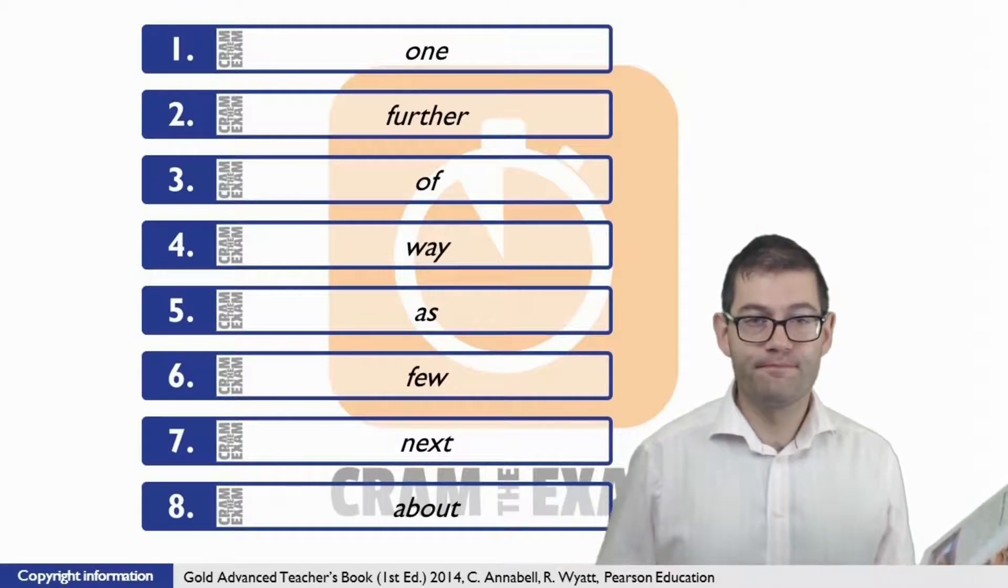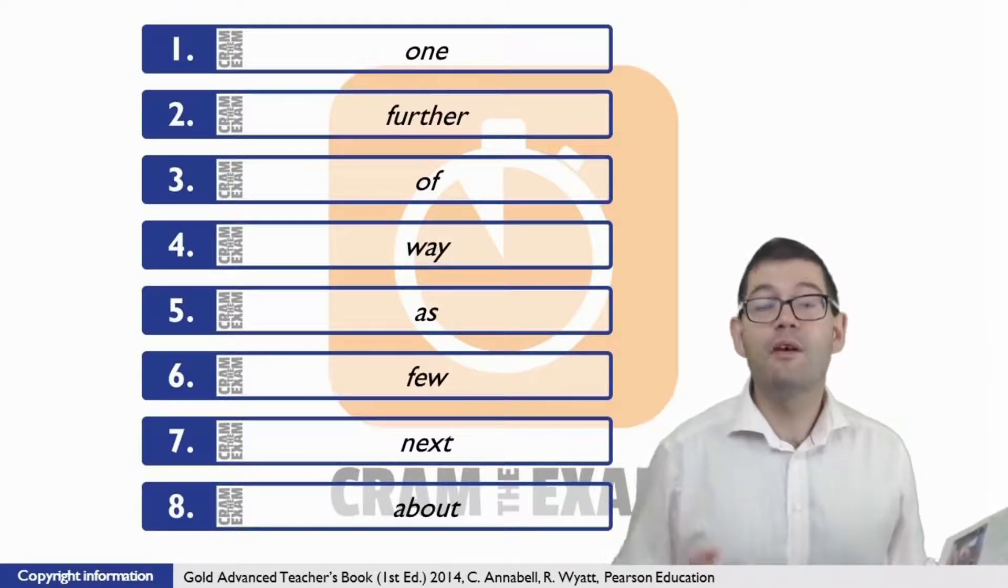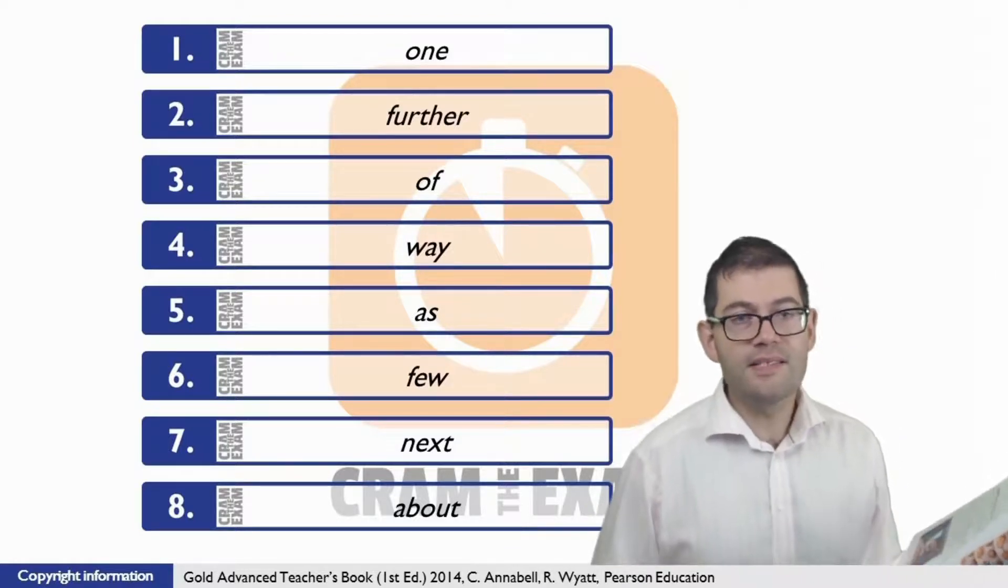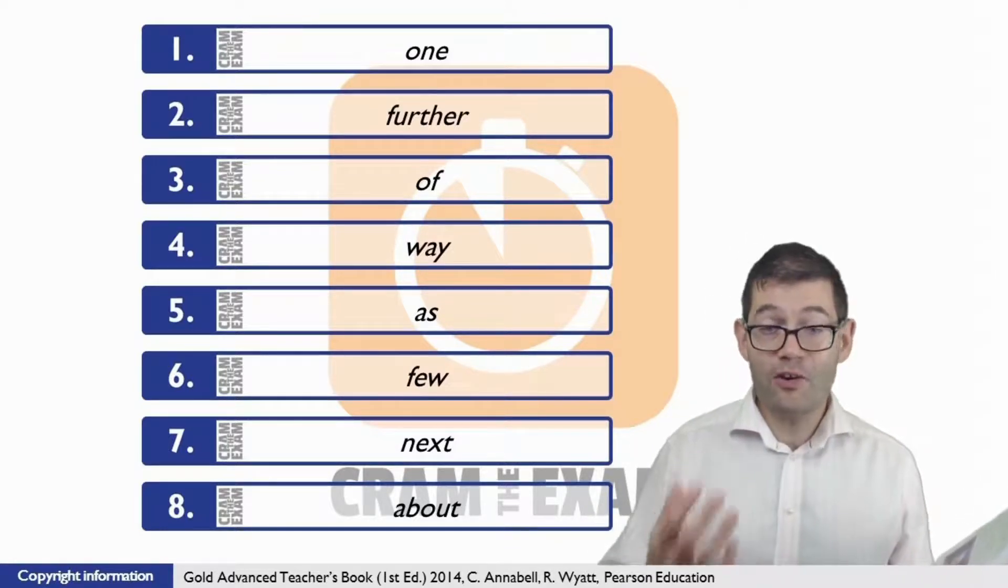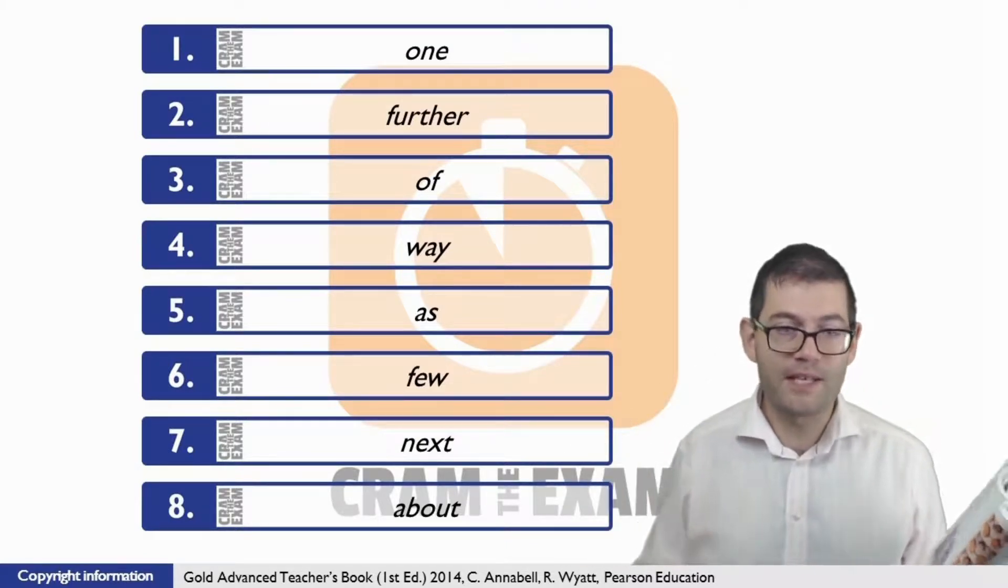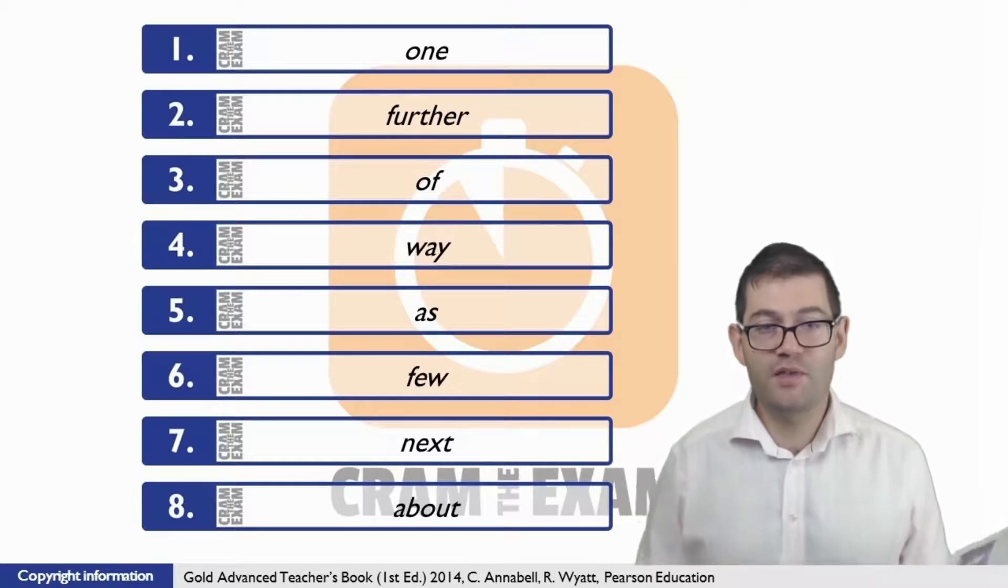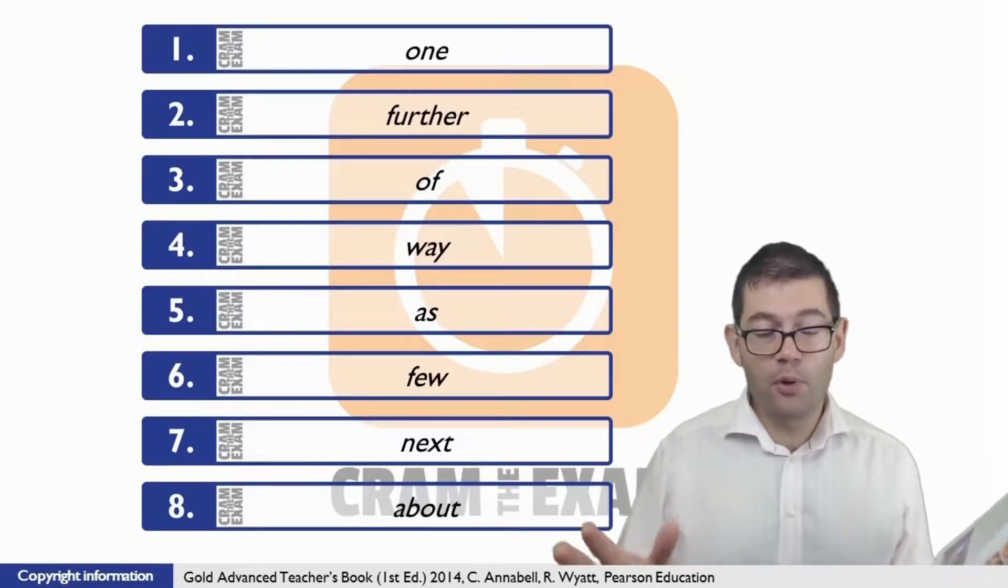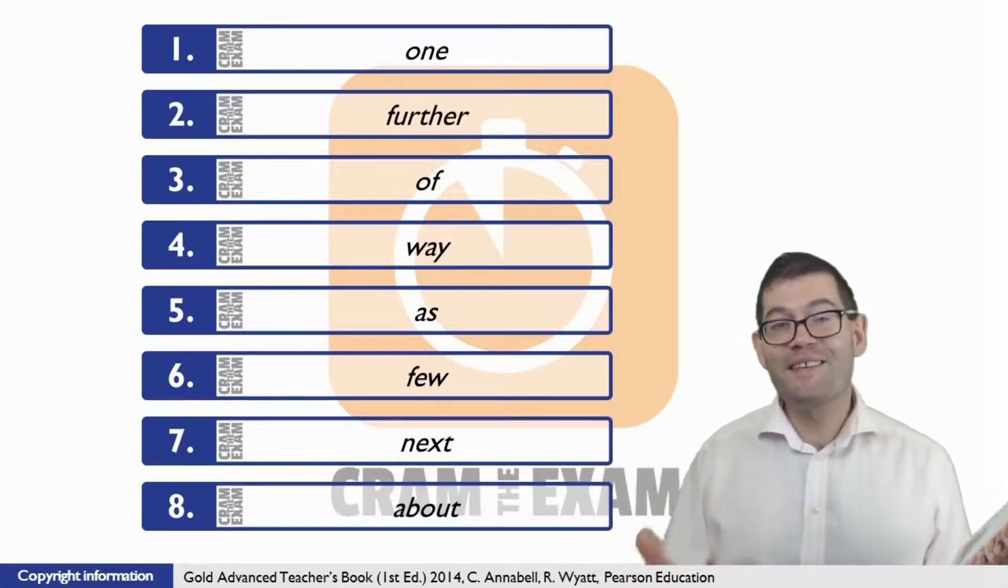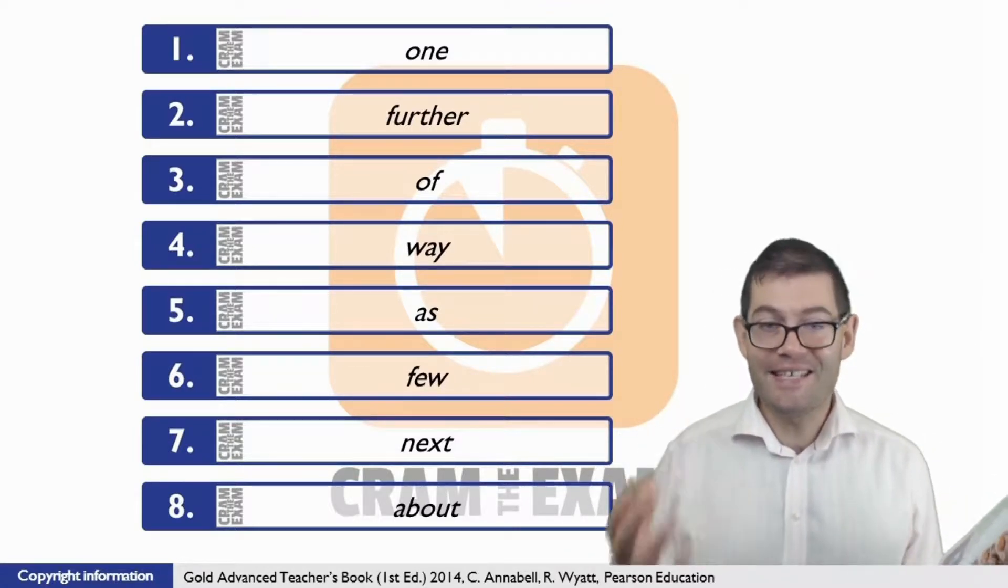Question number seven. What do we need here? We need a preposition of location. And to be honest, we don't see this preposition of location very often. In fact, in all of the exercises that I've done for all of the course books that we've covered on Cram the Exam, this is probably the first time I've seen this preposition of location. Boring little piece of trivia, but interesting for me. The preposition that we need here is 'next' - you put a tick next to something.